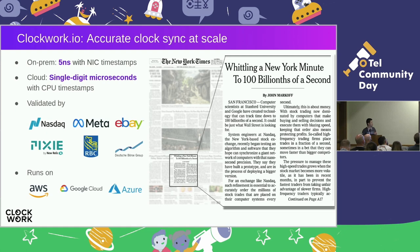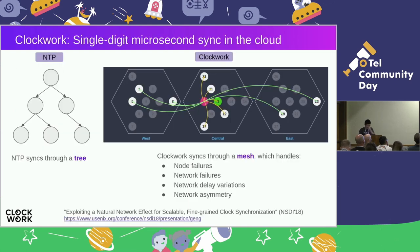A few quick words about Clockwork: we built a very accurate, scalable, and stable clock sync system that syncs clocks to nanoseconds with hardware timestamps, and in the cloud we synchronize clocks to microseconds using CPU timestamps. The clock sync system has made the front page of the New York Times, has been adopted by many reputable companies, and is available on all three major clouds. We published a paper about the system at NSDI '18 — the technical details are in that paper, and there's also a video of a talk available.